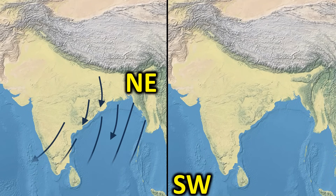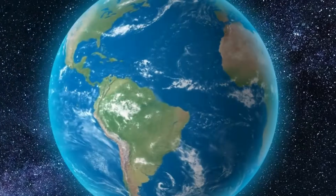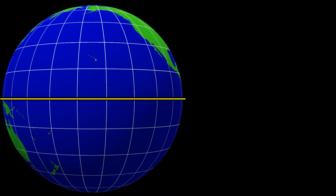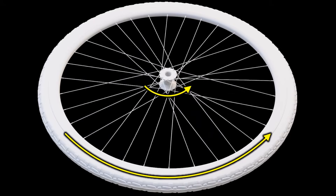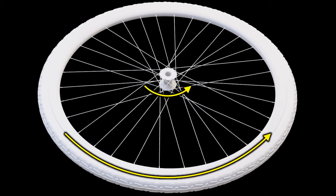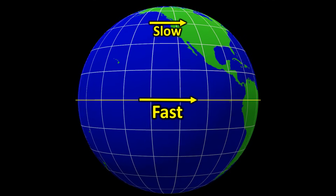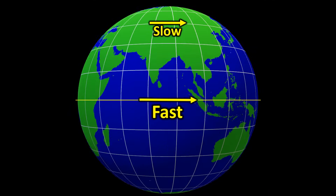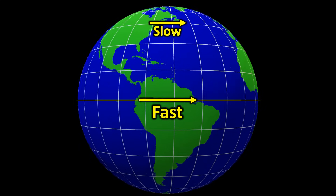But before we explore that in detail, we first need to understand why winds change direction when the seasons change. To do that, there are a few basic concepts we need to understand. We all know that Earth is roughly spherical in shape and rotates on its axis. When an object rotates, the parts farther from the axis move faster, and the parts closer to the axis move more slowly. The same is true for the Earth — regions closer to the equator move faster than those near the poles.